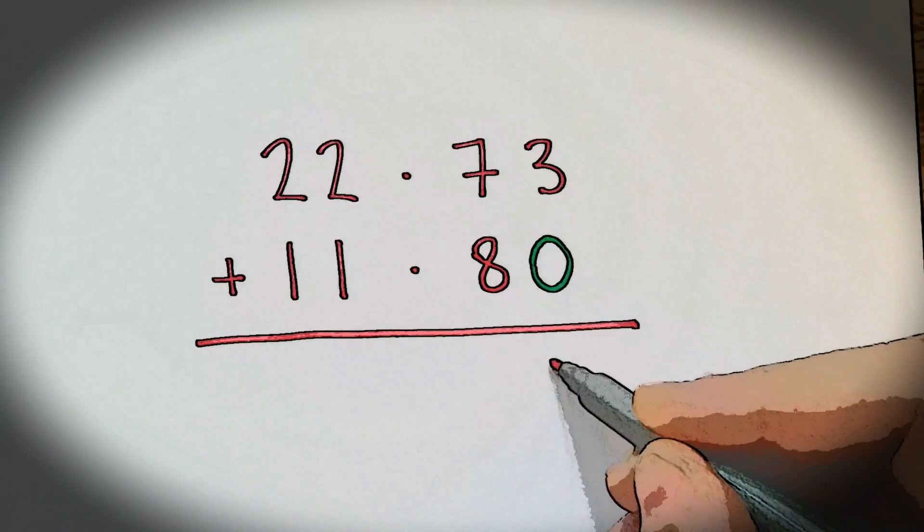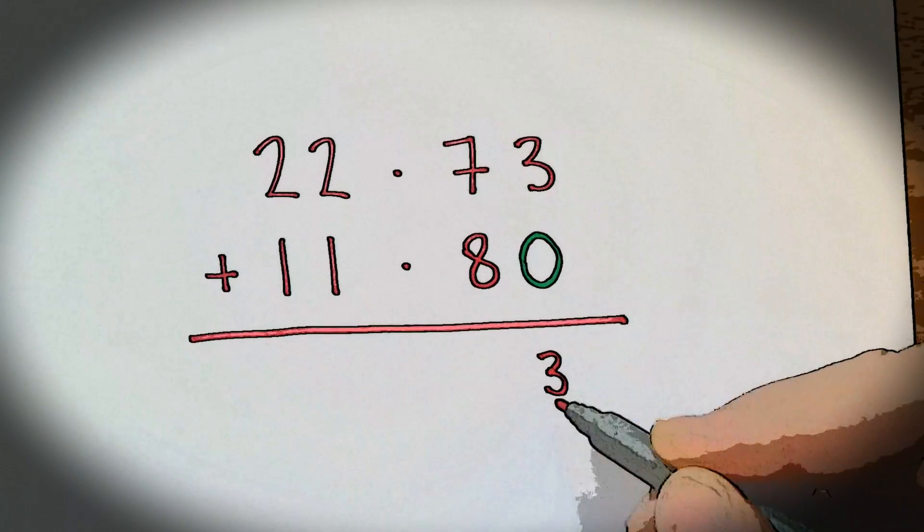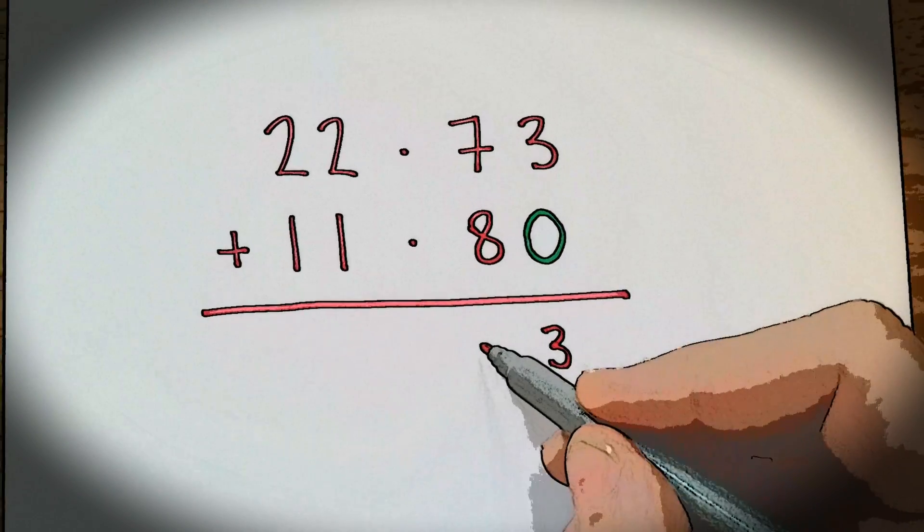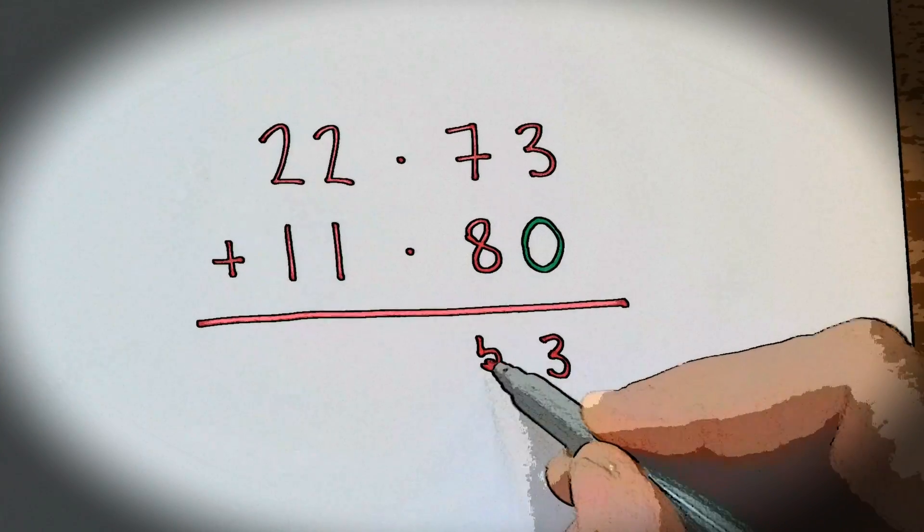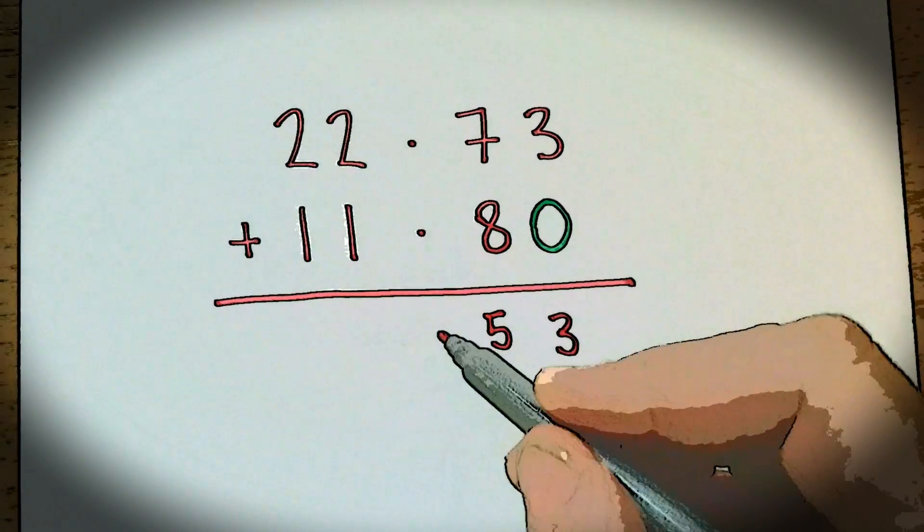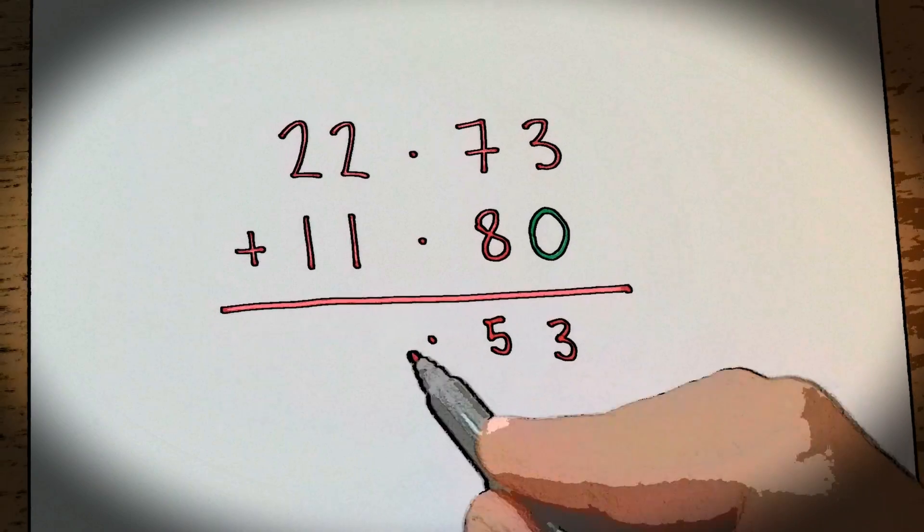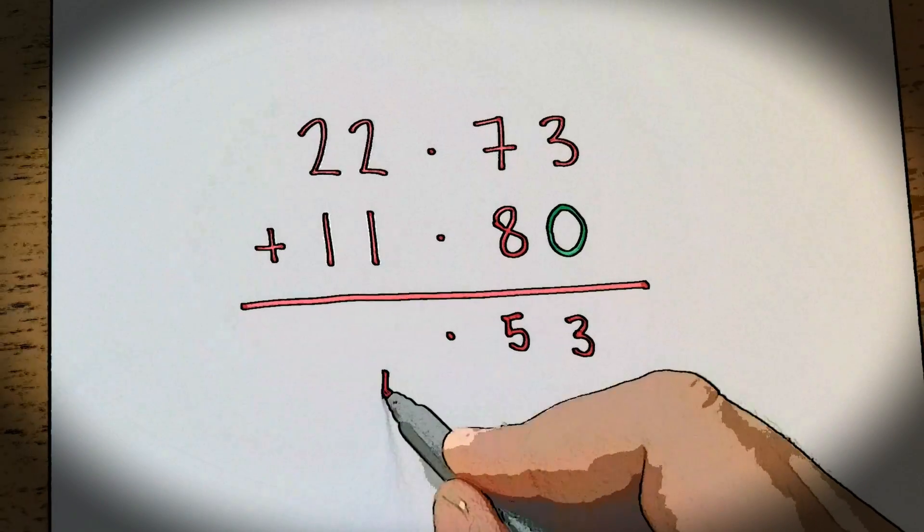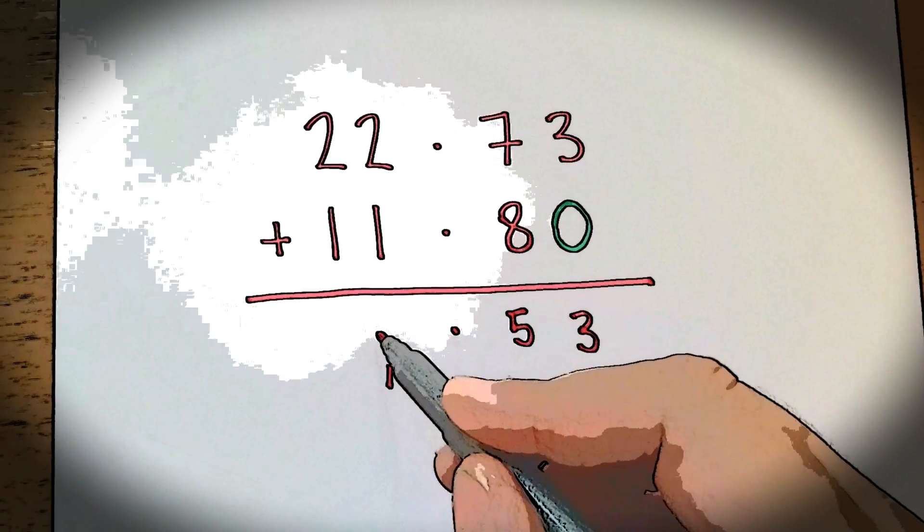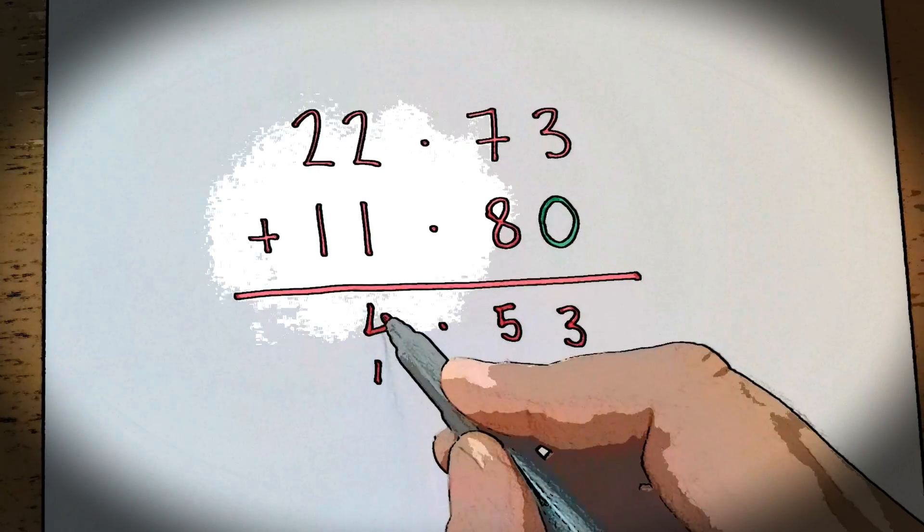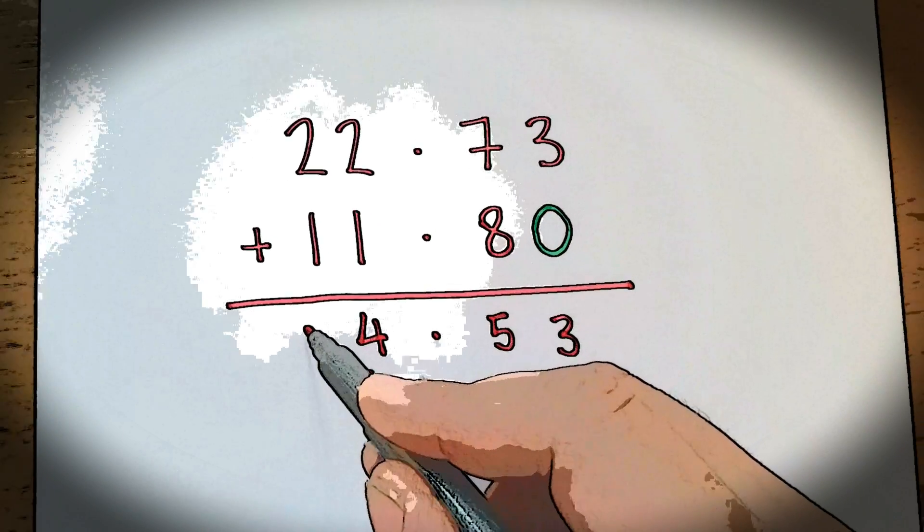3 plus 0 equals 3. 7 plus 8 equals 15, and then we carry the 1 to the left of the decimal point. 2 plus 1 plus 1 is 4. 2 plus 1 equals 3. So the answer is 34.53.